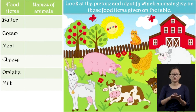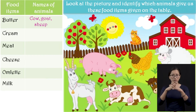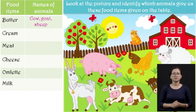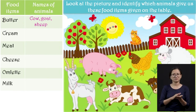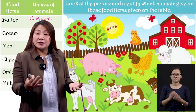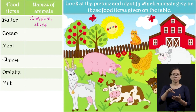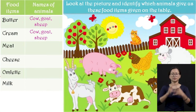Children, can you tell me which of these animals gives us butter? The animals that give us butter are cow, goat, and sheep. And even cream — the fresh cream that we eat in the cake, like in the Christmas cake, you find the cream layer. And in fruit salads. So we get cream also from cow, goat, and sheep. Then meat.